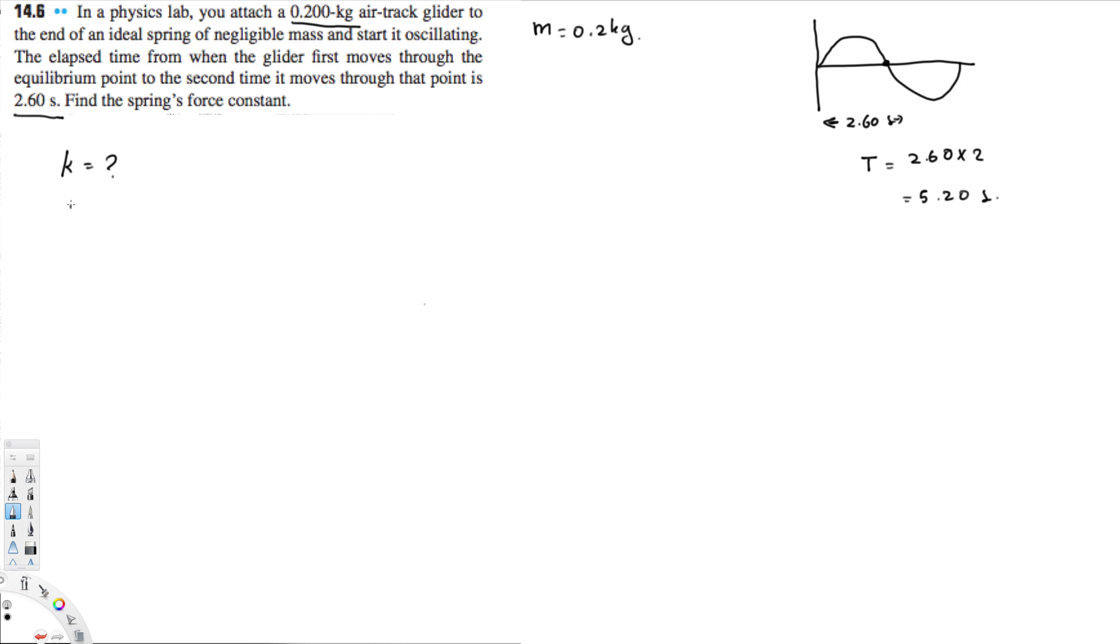So we have the period and we have the equation to find the constant: that is k equals omega squared m. We don't know the omega, but we know the mass. We can equate omega to 2π over T, and this is going to be squared times the mass.